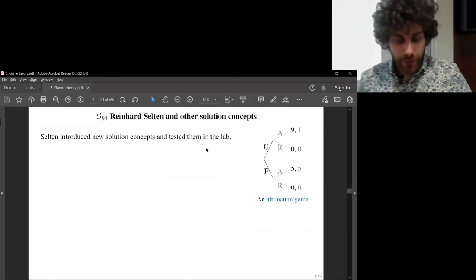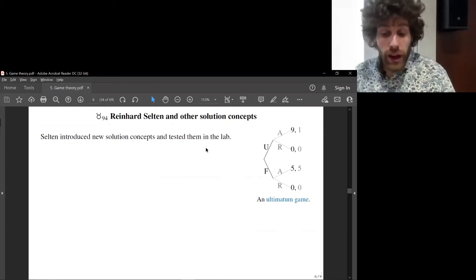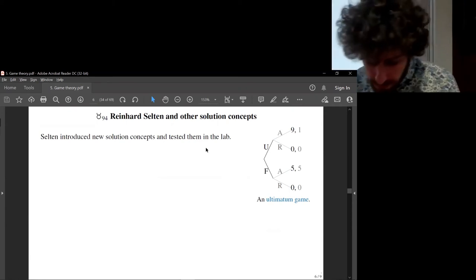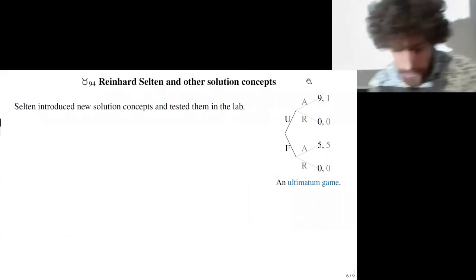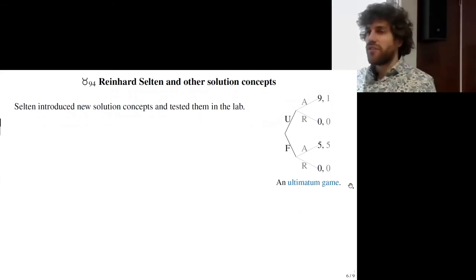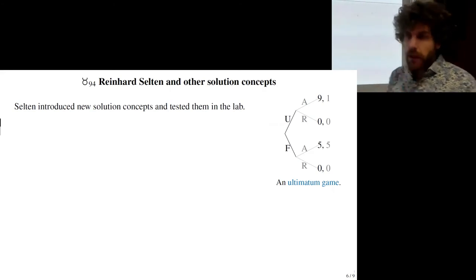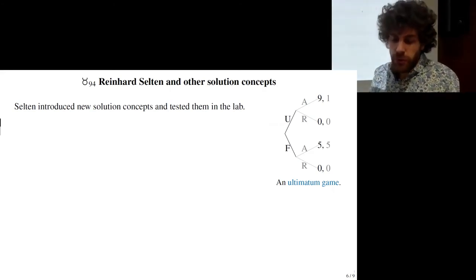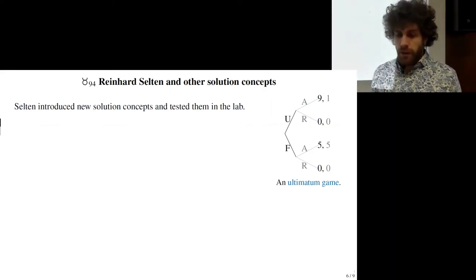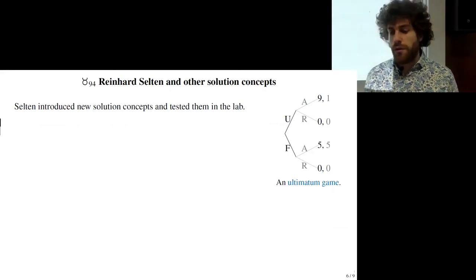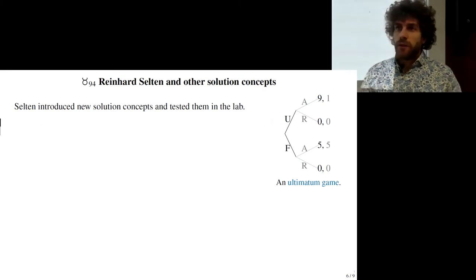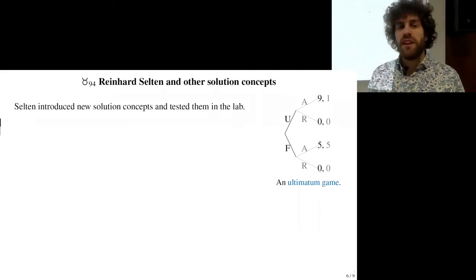Now we're tackling sequential games. There are new solution concepts appropriate for these. Let's start with the ultimatum game. This is the extensive form representation of sequential games rather than matrix form. In the ultimatum game, there are two players. The planner chooses how to split a prize of 10 francs: either a fair split — five francs each — or an unfair split — nine francs for her and one franc for the receiver.